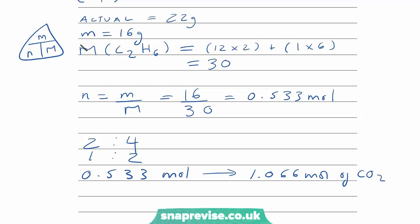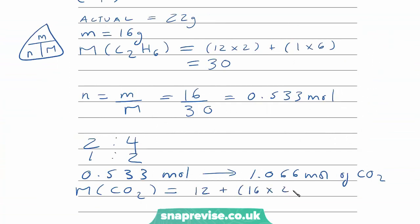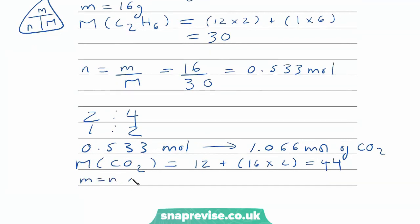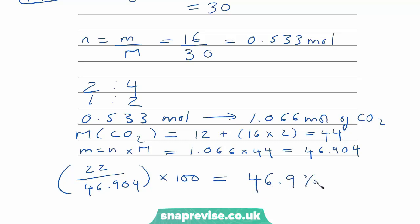We can use a rearrangement of this equation to find the mass of carbon dioxide we expect to be produced. The molar mass of CO₂: carbon is 12, oxygen is 15.99 which we round to 16, so that's 12 + (16 × 2) = 44. Rearranging, mass = moles × molar mass, so 1.066 × 44 = 46.904 grams. Substituting into our initial equation: 22 ÷ 46.904 × 100 = 46.9%. So the percentage yield of that reaction is 46.9%.